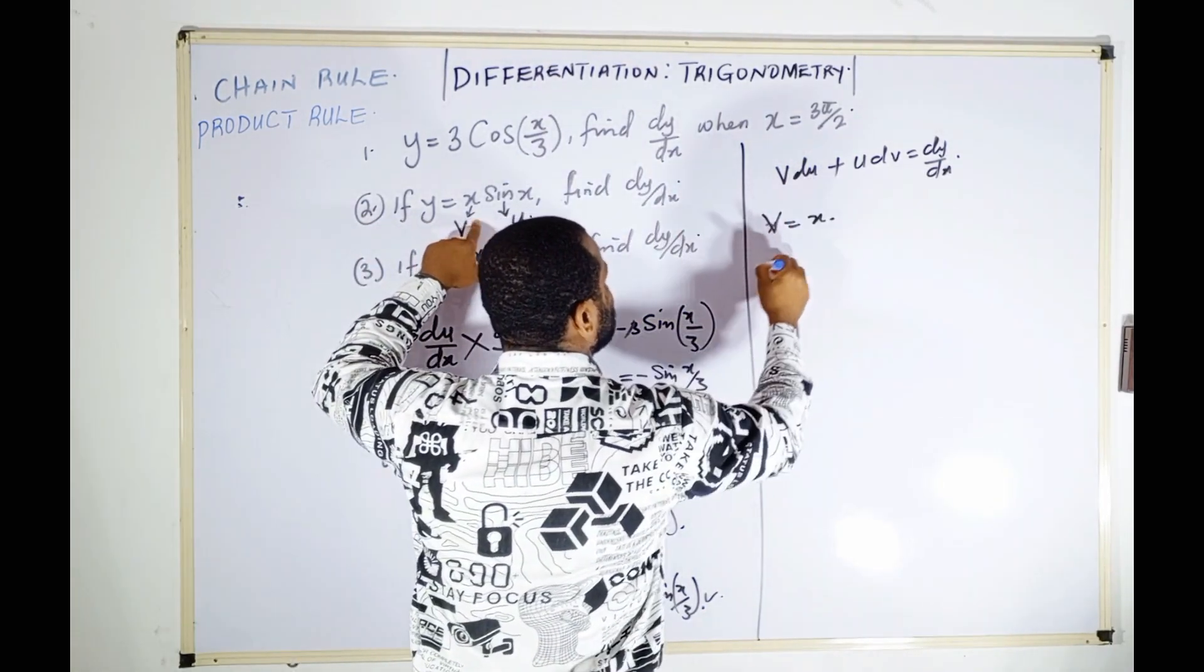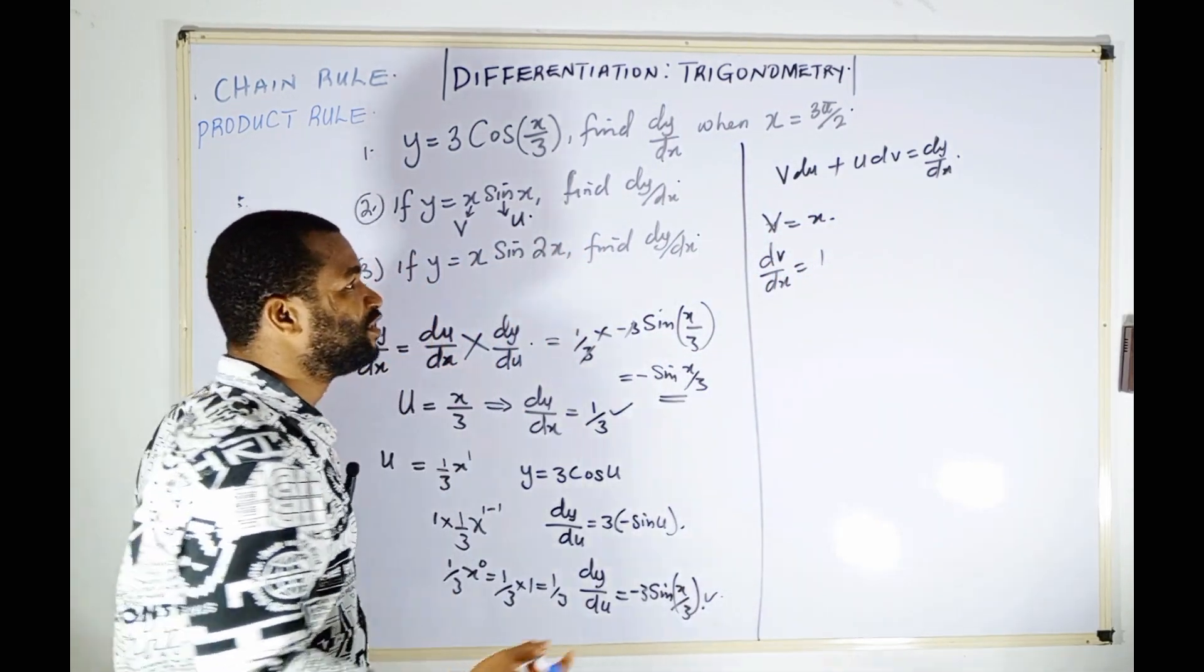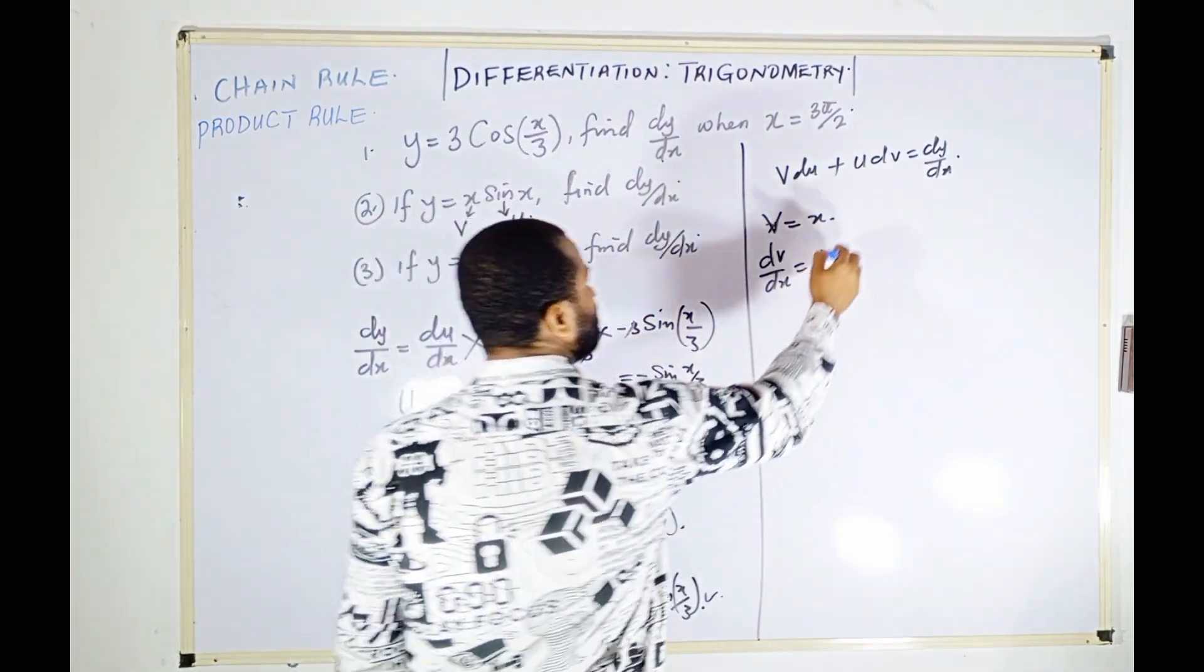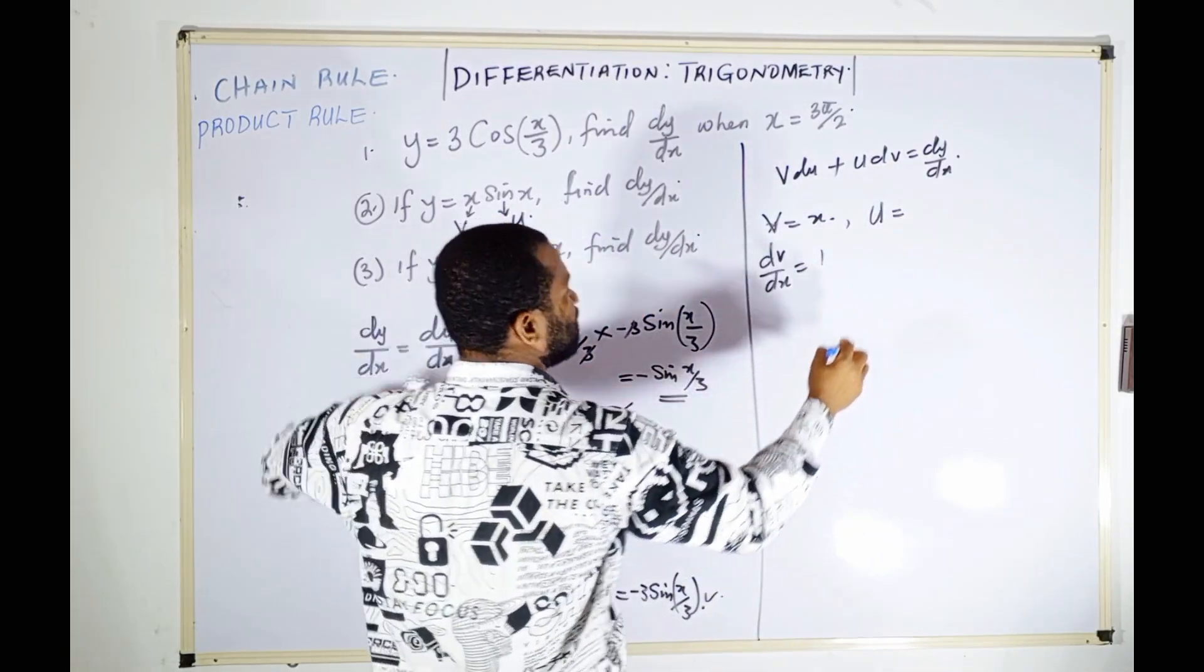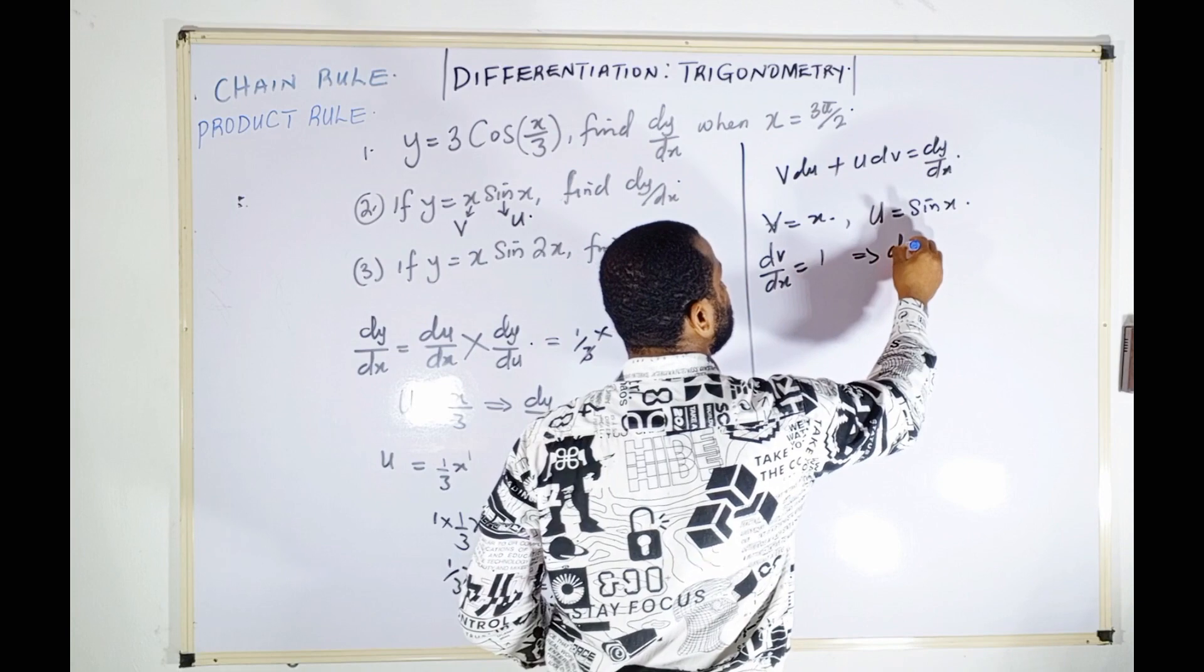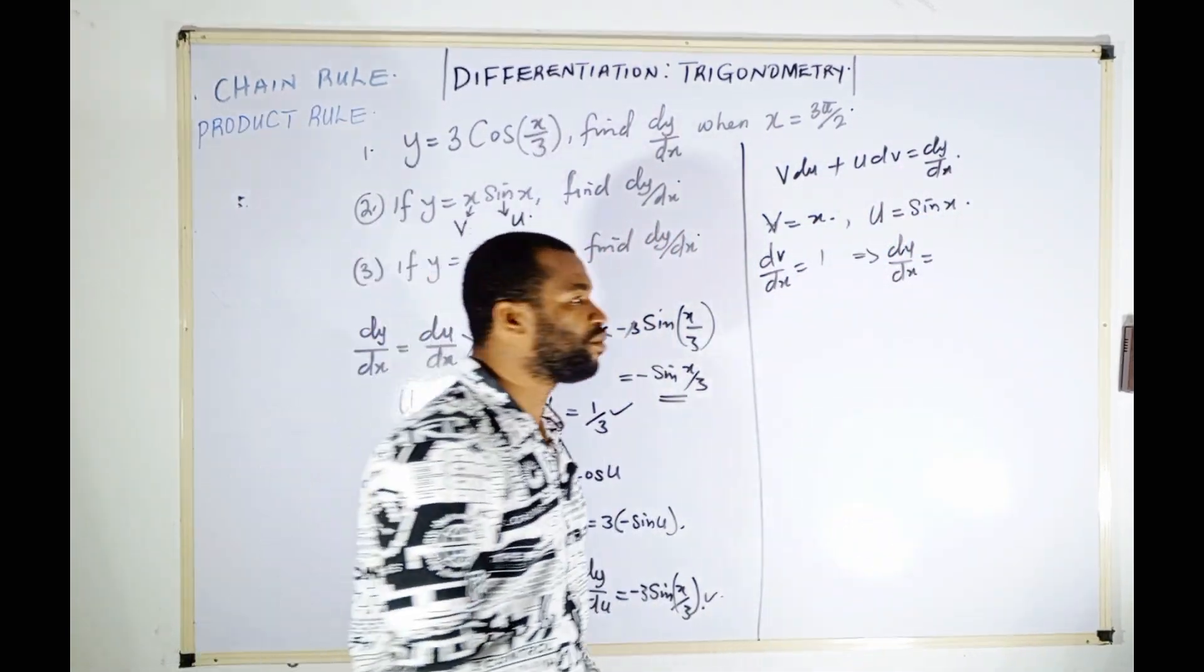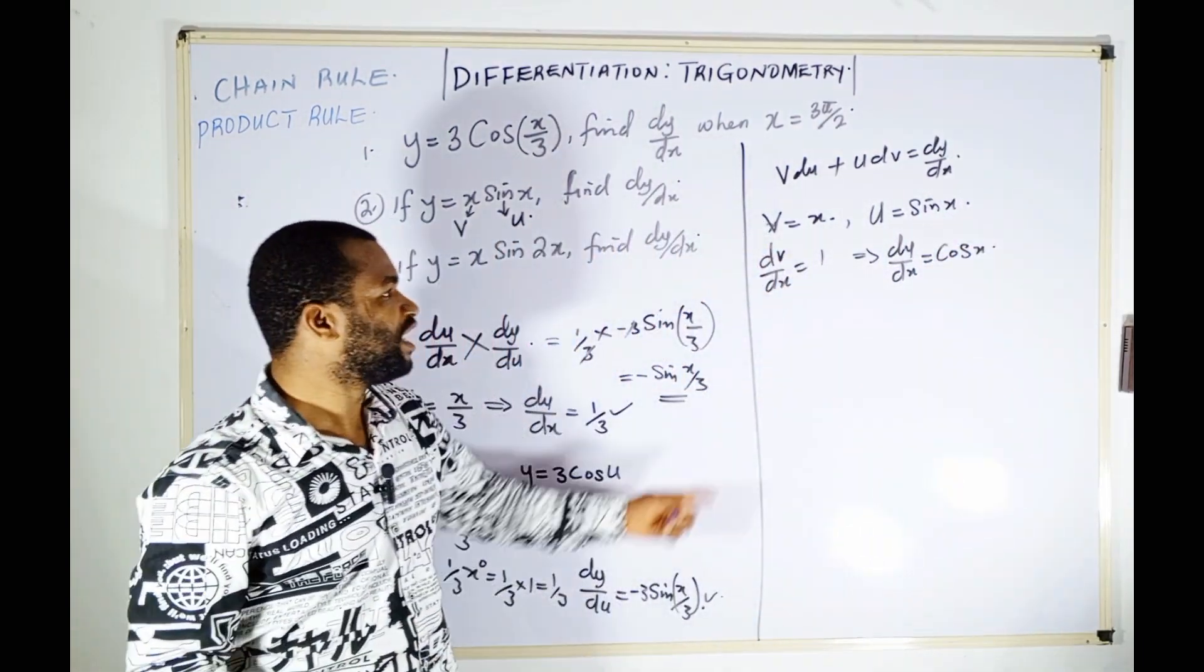Therefore dv/dx = 1, since 1 is the coefficient of x. And du/dx = cos(x), because when you differentiate sine you get cosine.